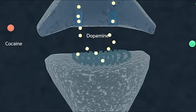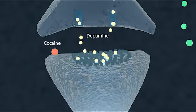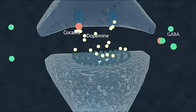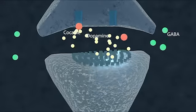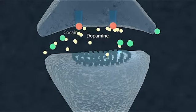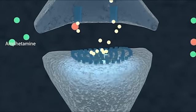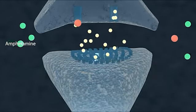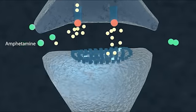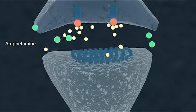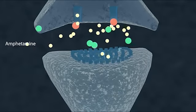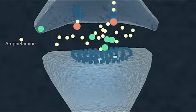Cocaine, for example, blocks the reuptake of dopamine, causing it to stay longer in the space between synapses, prolonging the pleasurable effect. Amphetamine, another psychostimulant, as well as preventing dopamine recapture, allows an increase in the amount of dopamine released, so that its concentration increases very rapidly.